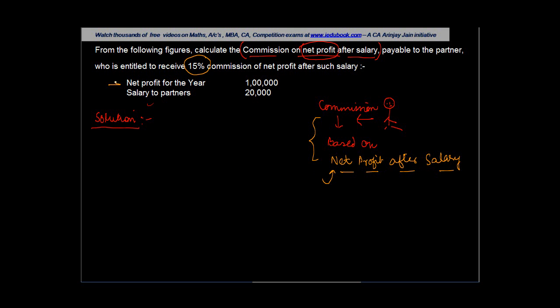In our case, the net profit for the year is given as $100,000. Normally, the presumption is this is net profit before salary. So, if you have to compute the net profit after salary, this is going to be equal to net profit for the year less salary to partners.